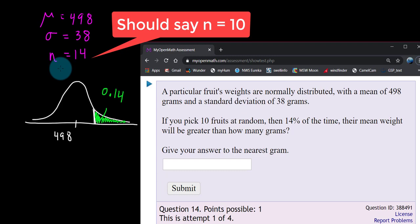But this question is different because they are giving you a probability. They are giving you an area under that normal curve and they want to know in essence what is this tick mark right here. What is the weight such that 14% of the time the mean will be greater than that weight? So this is a backwards problem.